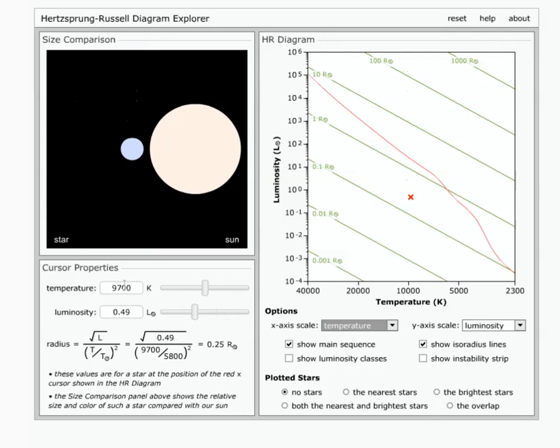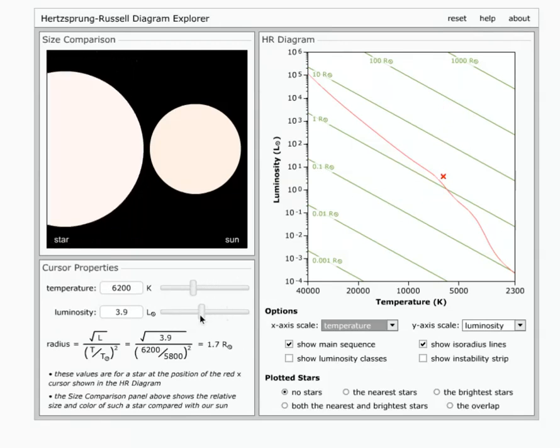Now I can also change those using these cursor property sliders, so I can increase the temperature or decrease the temperature, and I can increase the luminosity or decrease the luminosity.